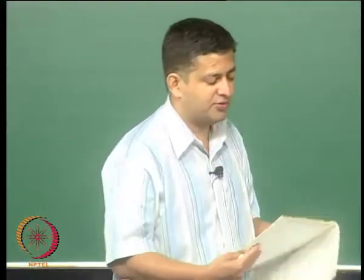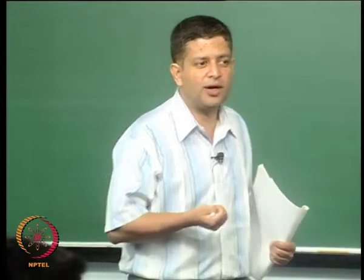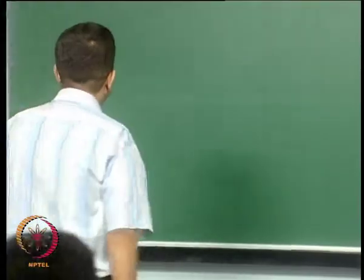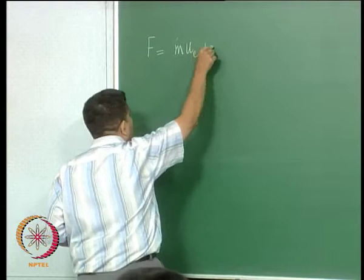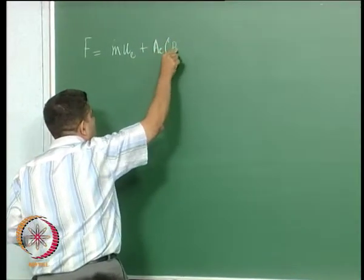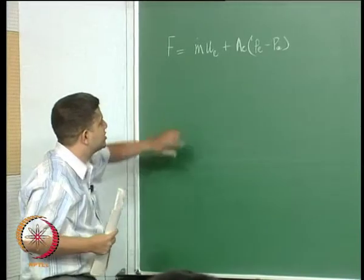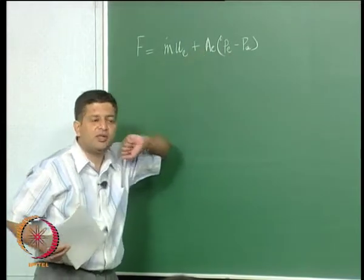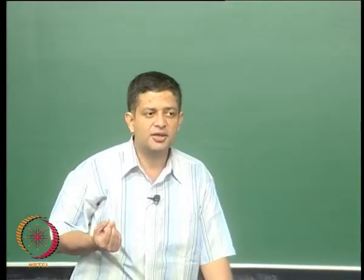Good morning. In the last class we had derived the thrust equation and we had also derived equations for mass flow rate, the AE by AT relationship in terms of PE by PC, and we had derived the expression for the exit velocity ue. Now if you look at the thrust equation, we can go ahead and define a parameter that is of prime importance in rocket propulsion — that is the specific impulse.